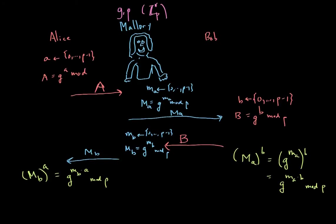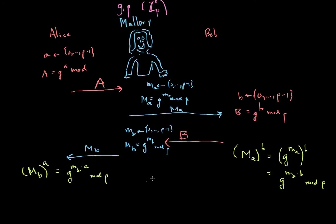And now let's think about what's happening here. So Alice has G to the m_b times a, and Bob has G to the m_a times b. Now Mallory can actually compute both of these things on her own.